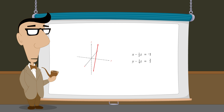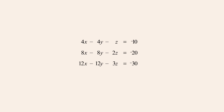In the next example, we will see what happens to a system of three linear equations when all three equations are multiples of each other. In this example, the second equation is a multiple of two times the first equation and the third equation is a multiple of three times the first equation. Therefore, all three equations are multiples of each other and all three equations are dependent.